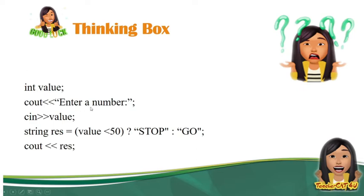In value, see out, enter a number. See in value. After nyan, string rest, is equal to, yung value mo daw is lesser than 50. Pag ang value mo is lesser than 50, iti-display niya ang stop. This is the expression if true. Pag ang value mo is not lesser than 50, iti-display niya ang go. Ibig sabihin nun, yun ang magiging hawak ni rest. It's either stop na string or go na string. Then, after nyan, ipiprint mo yung laman ng rest na variable. See out rest.